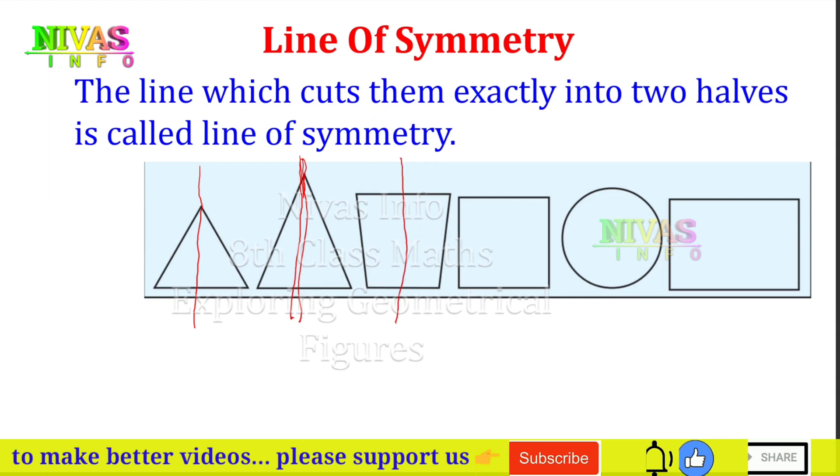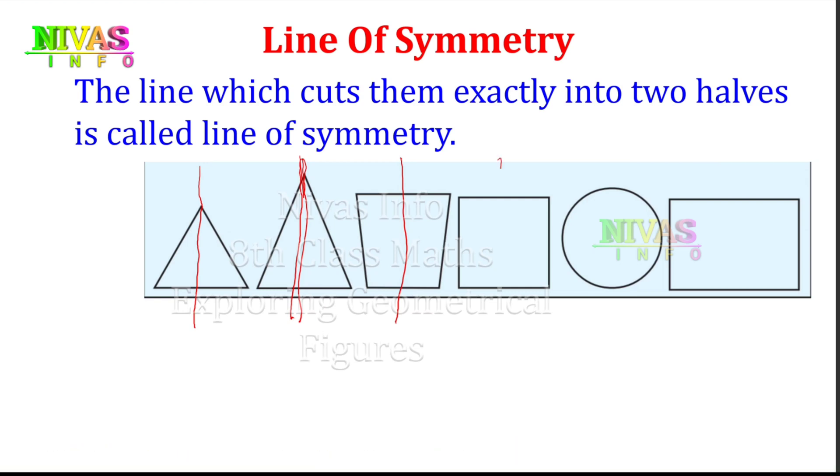Trapezium also has a line of symmetry. For a square, we draw the horizontal and vertical lines of symmetry.